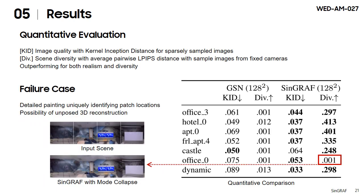We notice that Scene Graph also fails to generate diversity for a scene with detailed paintings, which can uniquely identify the location of patches. Still, a mode-corrected Scene Graph produces an interesting result that shows the possibility of unposed 3D reconstruction.